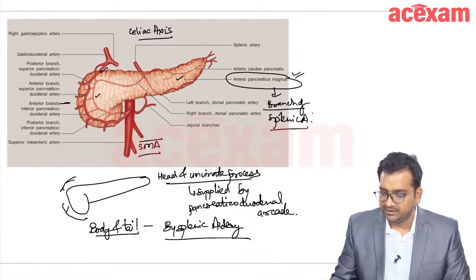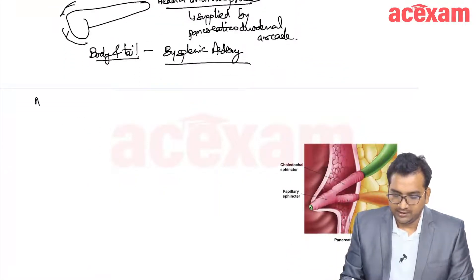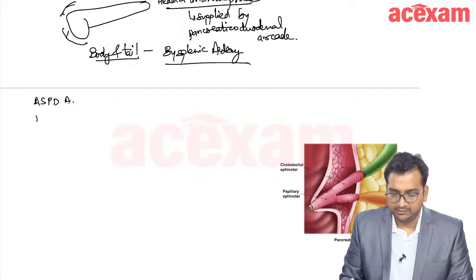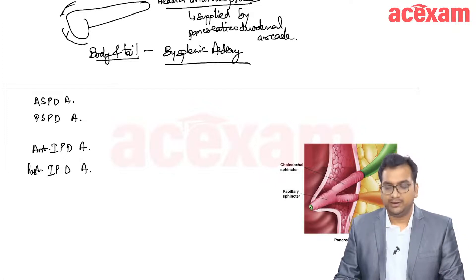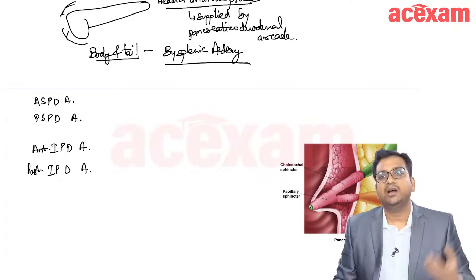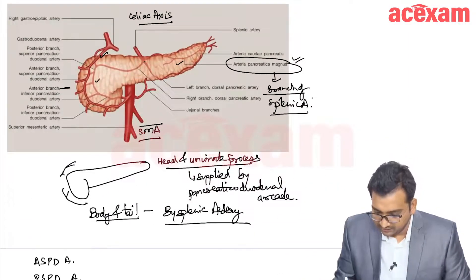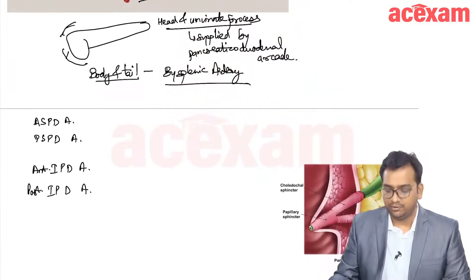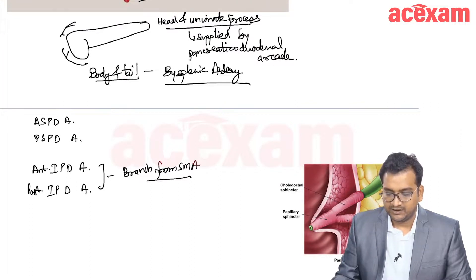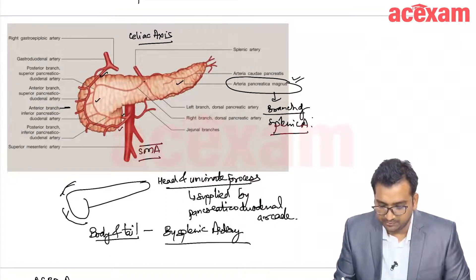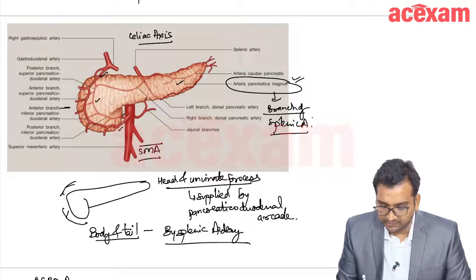The four arteries are: anterior superior pancreaticoduodenal artery, posterior superior pancreaticoduodenal artery, anterior inferior pancreaticoduodenal artery, and posterior inferior pancreaticoduodenal artery. Both inferior branches are from the SMA — one branch anteriorly and one posteriorly — while the anterior superior and posterior superior pancreaticoduodenal arteries are from the gastroduodenal artery (GDA).